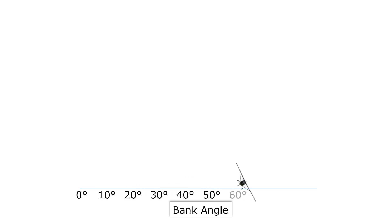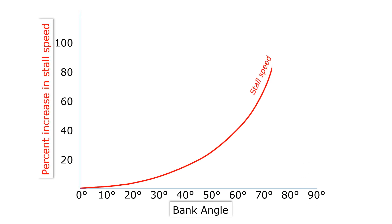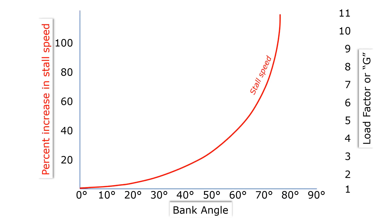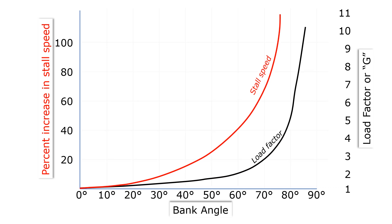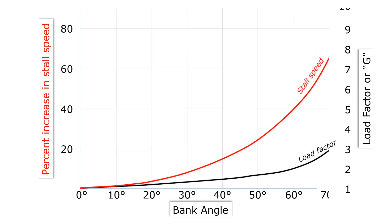This is how we plot out how changes in bank angle affect changes in stall speed — expressed as a percentage increase — and changes in load factor. Holding altitude in a 90-degree turn brings load factors up towards infinite without some crazy thrust and control surfaces like on a fighter jet, so let's zoom in on this part of the chart.